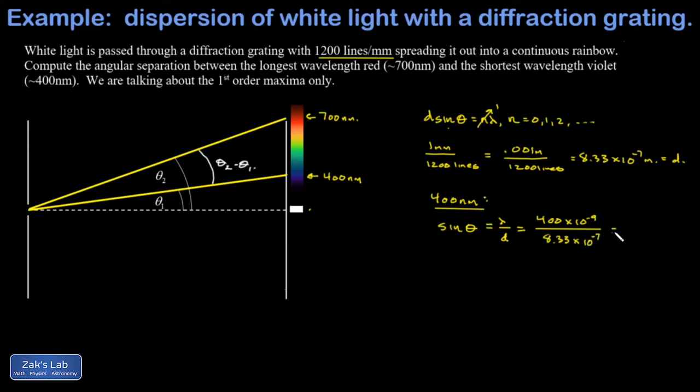the slit spacing in meters, and I get 0.480. Solving for theta, I get 28.7 degrees for that violet fringe.